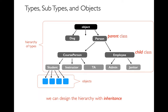There might be other kinds of employees — administrators, janitors — so even though we have person very generally, we have subtypes of person and then sub-subtypes. A little vocabulary: person is an example of what we'd call a parent class or a base class, and when we have a more specific type we call that a child class.